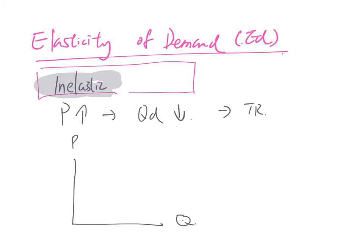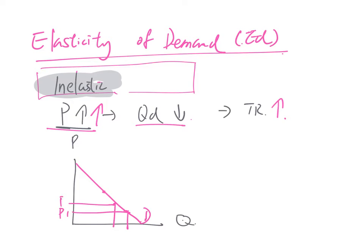For inelastic demand, when the price goes up, quantity goes down — but the quantity drop is smaller, meaning the percentage change in price is bigger than the percentage change in quantity demanded. So total revenue goes up. In the diagram, using a 45-degree straight demand curve, we place two intercept points below the midpoint. With P1 to P2 increasing and Q1 to Q2 decreasing, the plus area is bigger than the minus area, so total revenue increases.